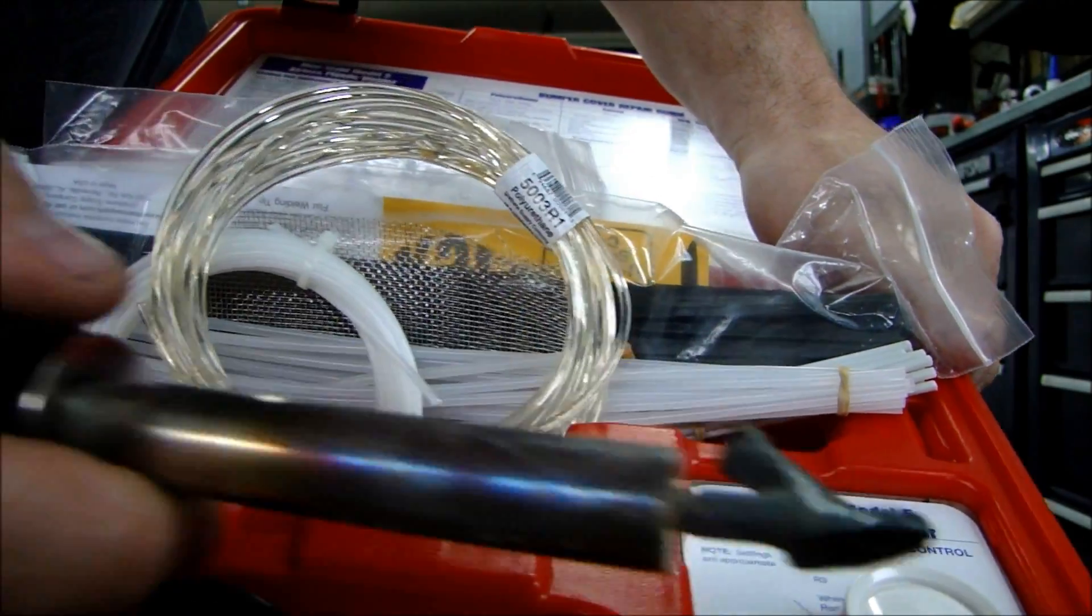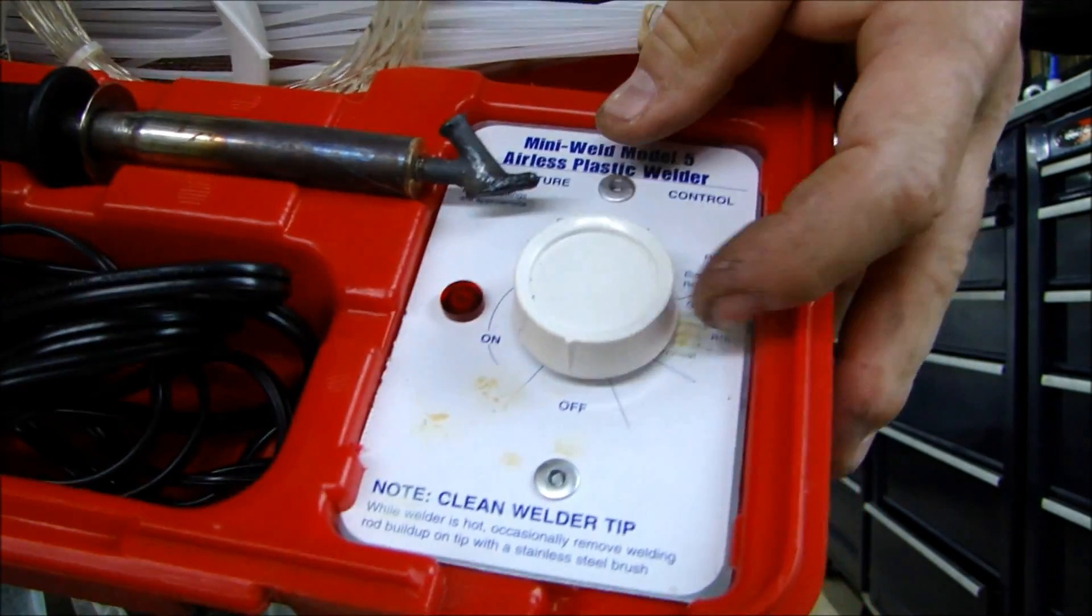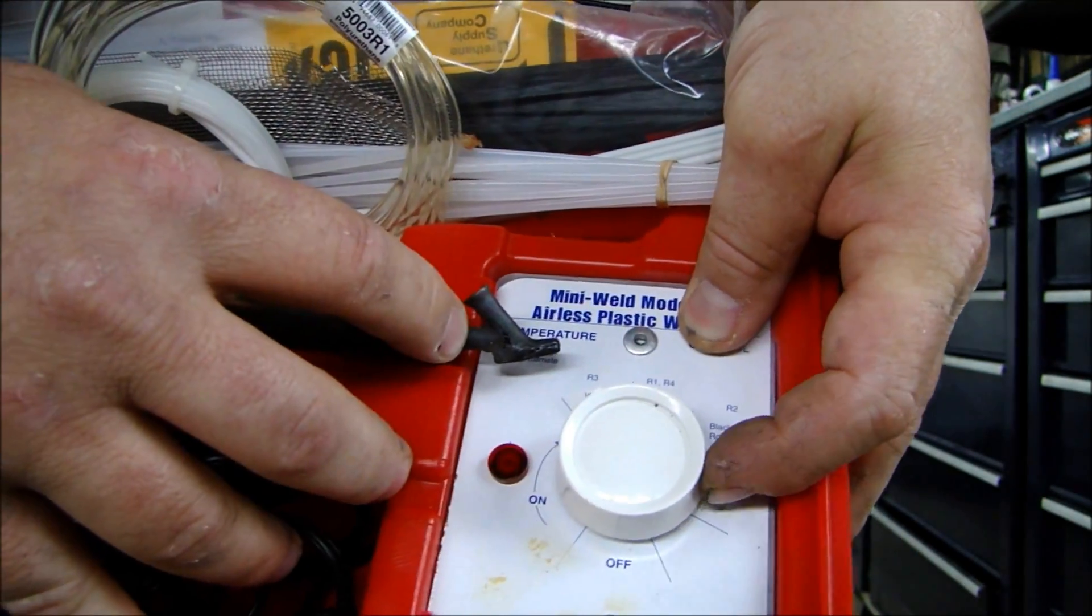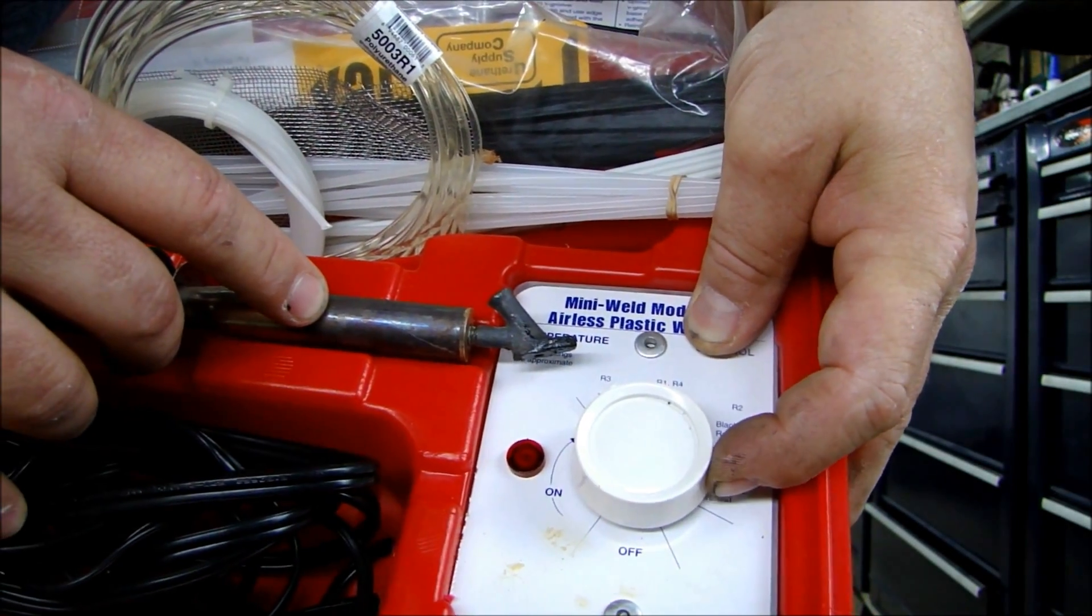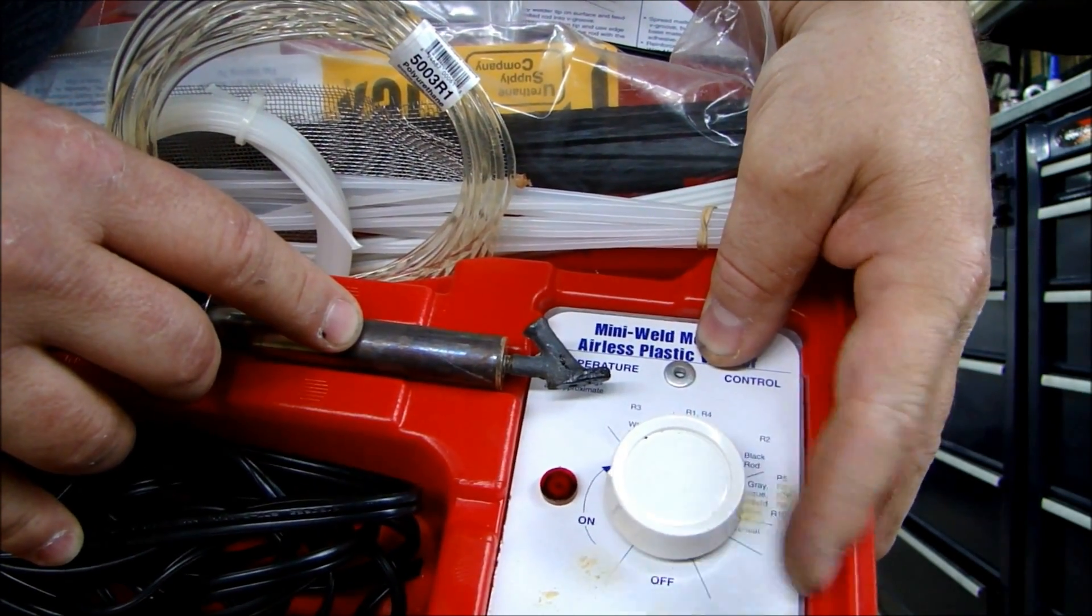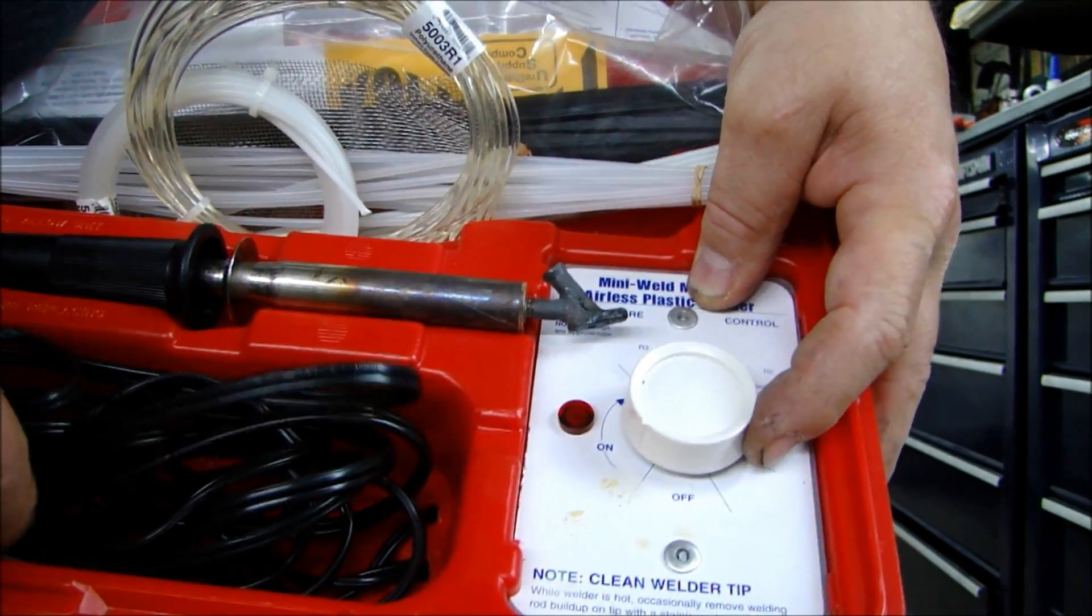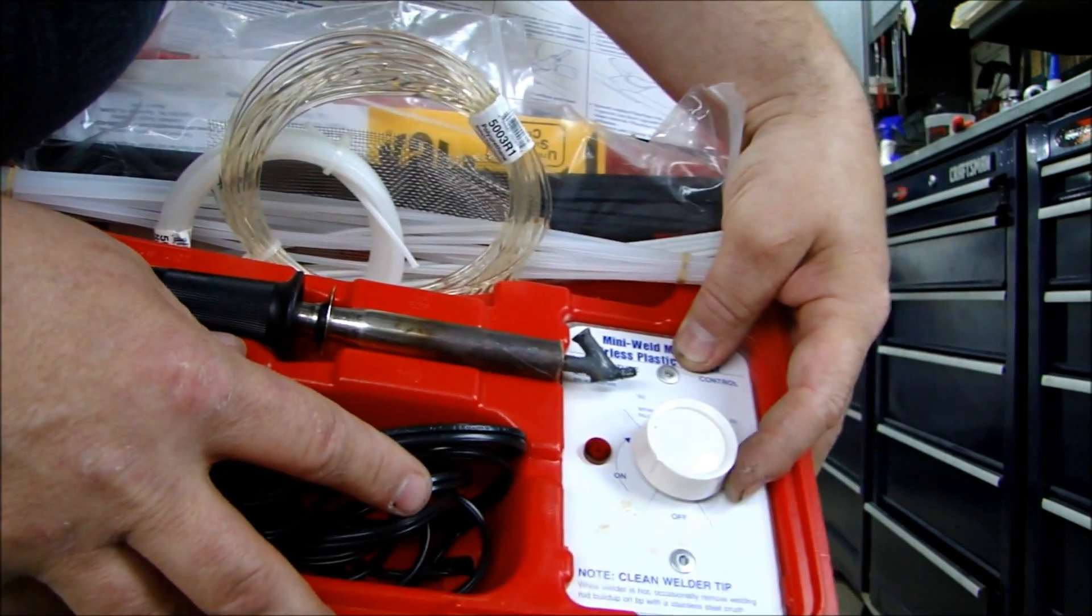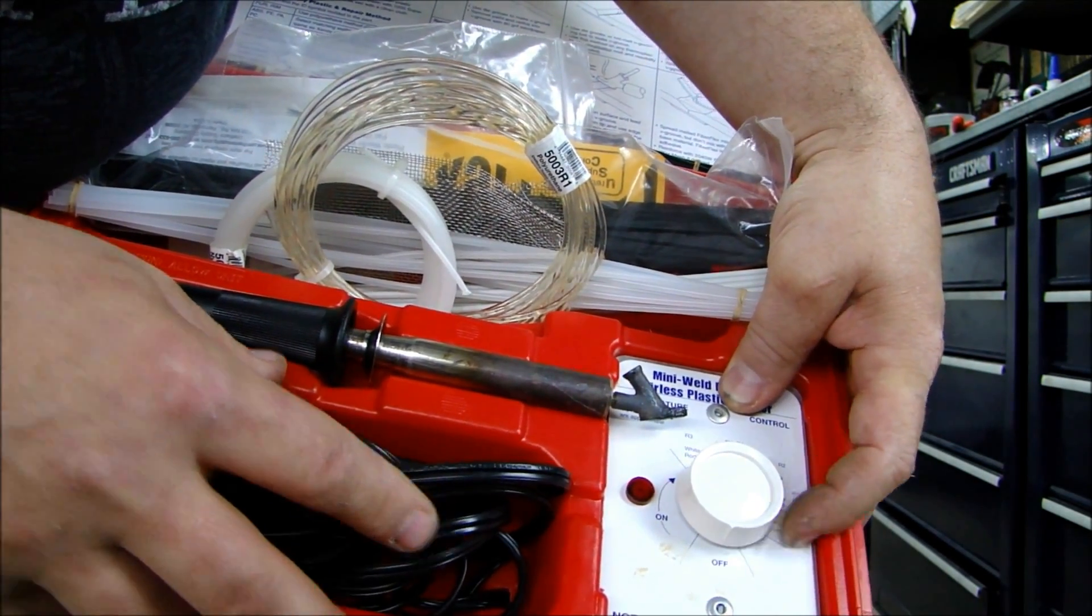So I have the soldering iron, or the heat iron, and it has a temperature control. And it's really nice, because it shows you as you turn it on what you're doing here. Weld rod - white rod, clear rod, black rod, gray rod. So it shows you the temperature and where it should be set for each specific plastic. And it simply plugs into a 110 outlet. Very simple tool to use. And I'm going to be welding, let me show you what I'm going to be welding and how the process works.